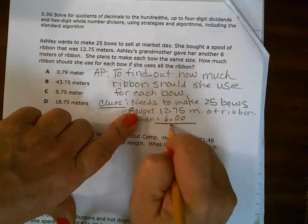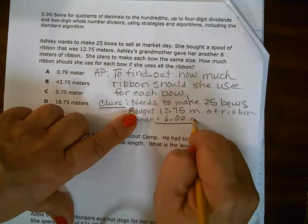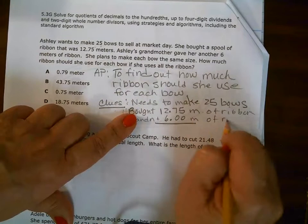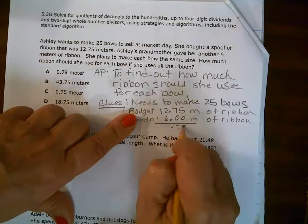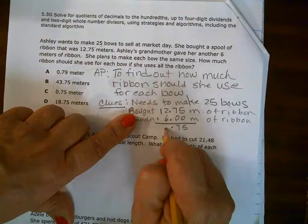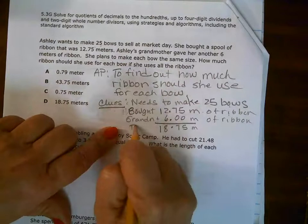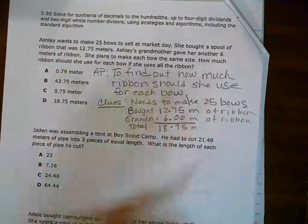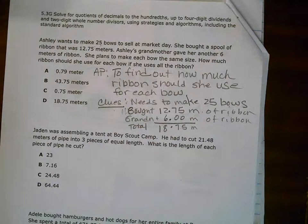Just stack that right on top. Keep those decimals lined up. It's a whole number. Some of you would put it over here in the decimal and it's not. Okay. So this makes it 75, six, seven, eight. So this is her total amount of ribbon.